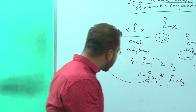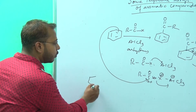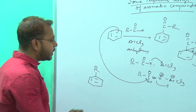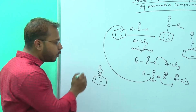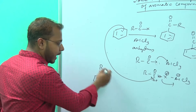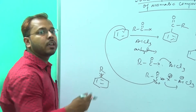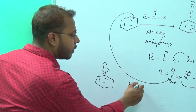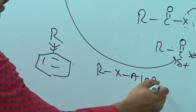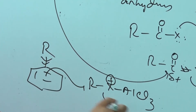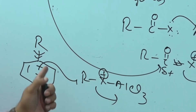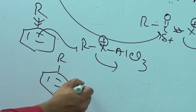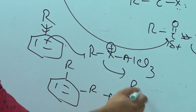In alkylation, however, the R group has a plus-I (electron-donating) effect. Due to this plus-I effect, the electron-donating capacity of the benzene ring is increased, making it ring-activated. Therefore, further electrophilic attack can take place, leading to polyalkylation.